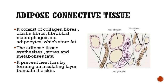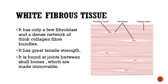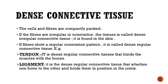The third type is white fibrous tissue. It has only a few fibroblasts and a dense network of thick collagen fibers present in bundles, giving it great tensile strength. It is found in the joints between the skull bones, making them immovable.